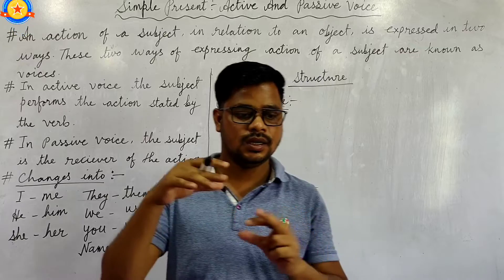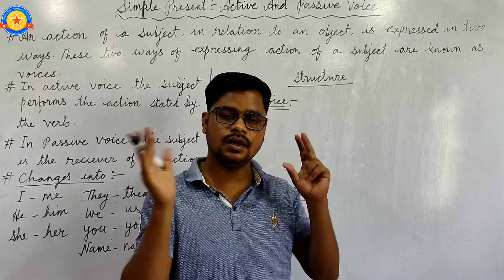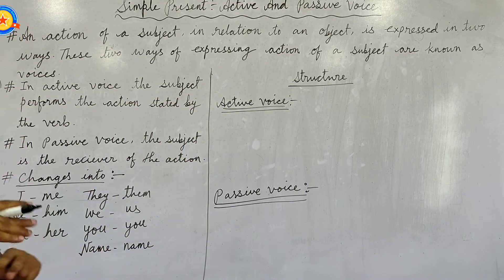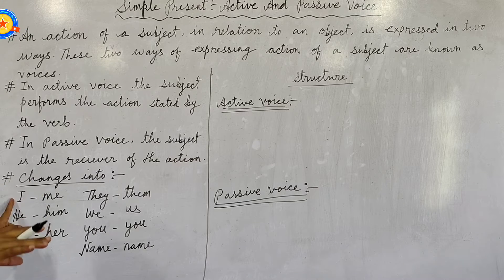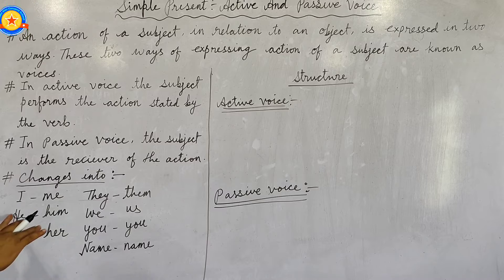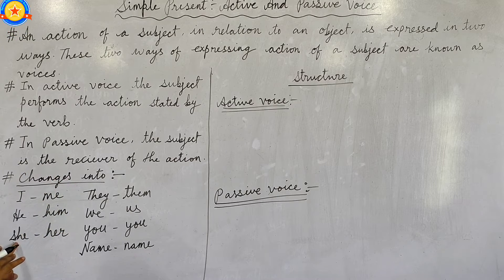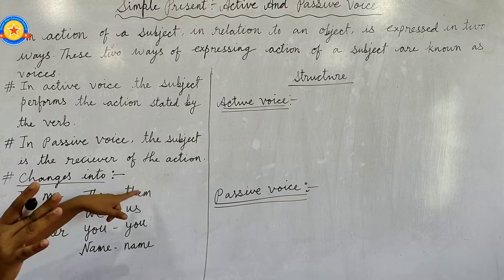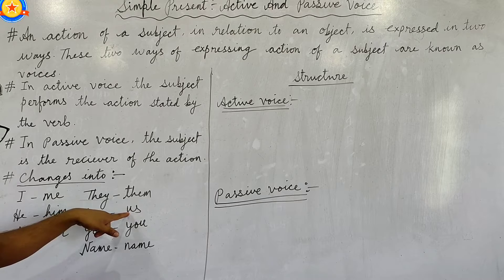The sequence is changed — the subject and object positions will be reversed, but the meaning will remain the same. In active and passive voice, if the subject is 'I', it becomes 'me' in the object position. If the subject is 'he', it becomes 'him'. If the subject is 'she', it changes to 'her'. If the subject is 'they', it becomes 'them'. If the subject is 'we', it becomes 'us'.